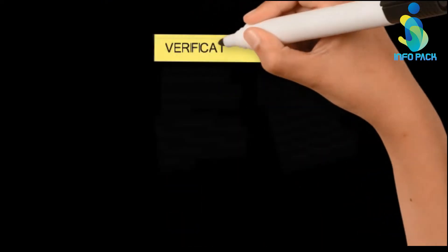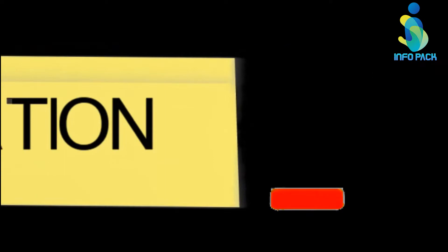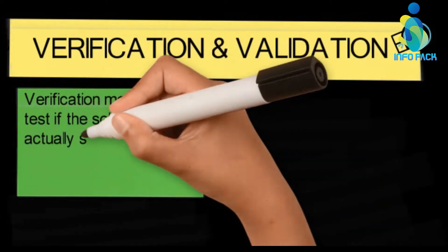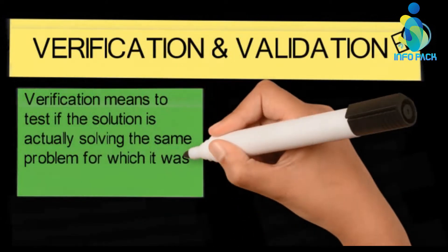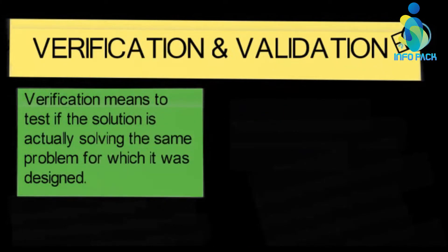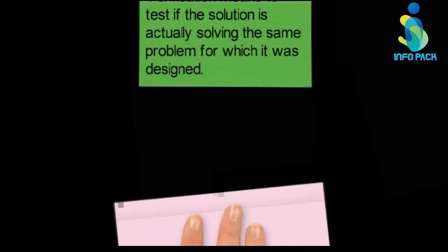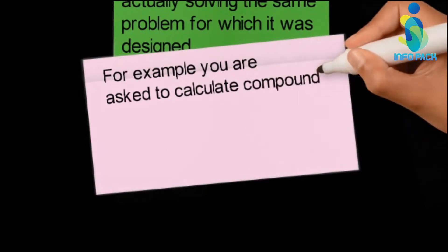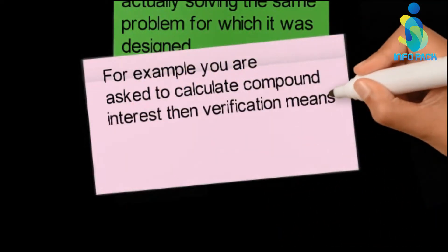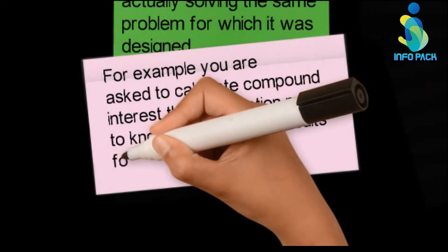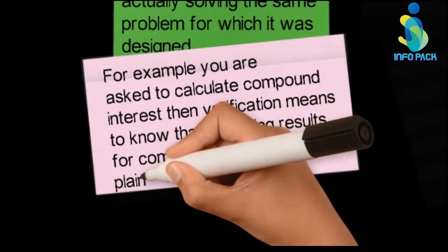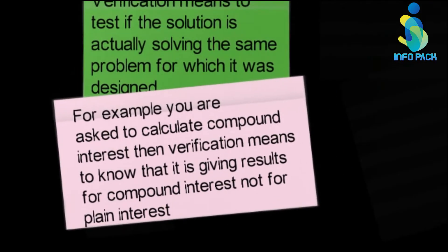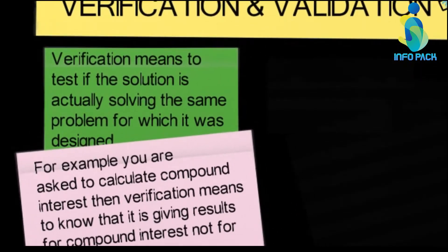First of all, what does verification mean? Verification means to test if the solution is actually solving the same problem for which it was designed. For example, if you are asked to calculate compound interest, then verification checks that the solution is giving results for compound interest and not for plain interest.